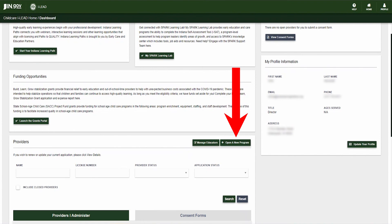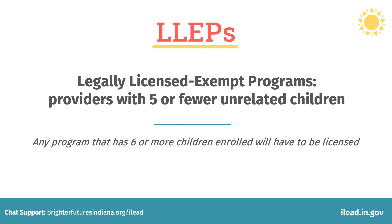Legally licensed exempt programs can skip the Orientation 1 and 2 training and go directly to the licensing application on the iLead dashboard. LLEPs are only available to providers with five or fewer unrelated children. Any program that has six or more children enrolled will have to be licensed.